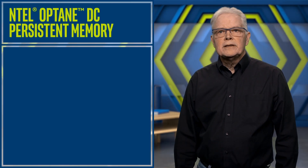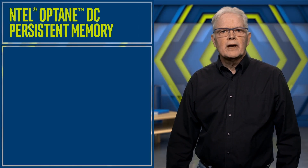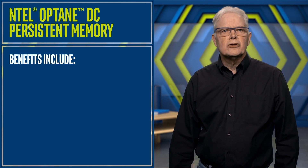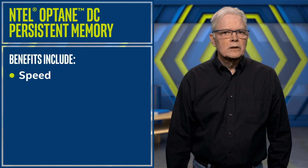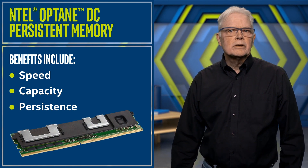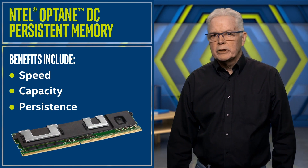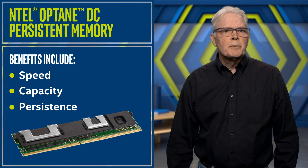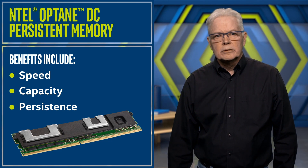Intel Optane DC Persistent Memory is an innovative memory technology that delivers a unique combination of speed, capacity, and persistence. It can be used in multiple ways, as large memory or fast storage, depending on the requirements of the application.